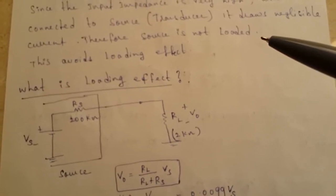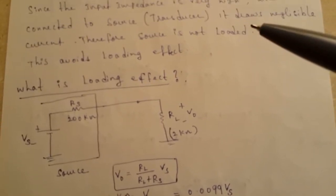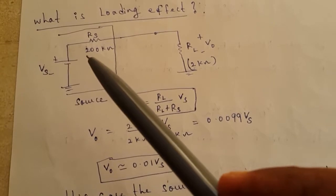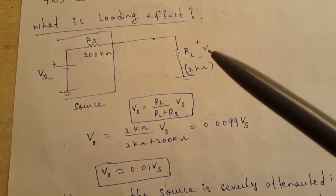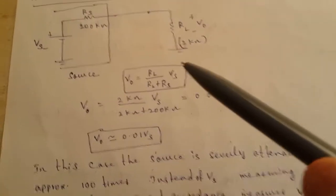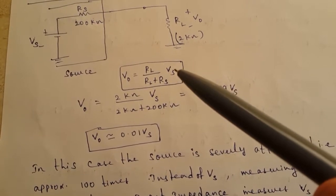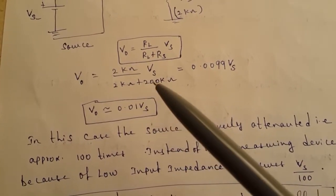Since the input impedance is very high, when this is connected to a source such as a transducer measuring a very low amplitude signal, it draws negligible current, so the source is not loaded. The voltage follower eliminates the loading effect. For example, consider a source VS with a source resistance of 200 kilo ohms connected to a measuring device with a resistance of 2 kilo ohms. The output voltage across the load is: V_out = (RL / (RL + RS)) × VS.